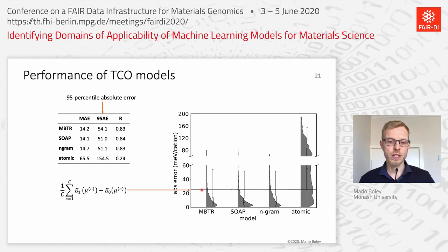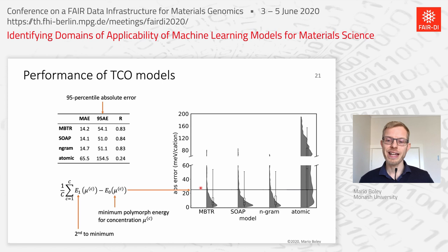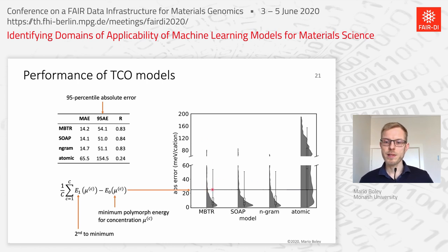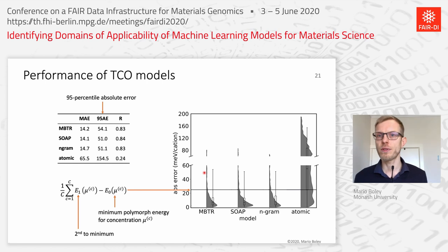To put this in context, I have drawn a horizontal reference line corresponding to the mean energy difference across all considered concentrations between the ground state polymorph and the second-lowest energy polymorph. If my error reaches that region, I have a good chance of confusing the ground state polymorph for individual concentrations. This is discouraging — there's a relatively high probability that all these models end up close to or beyond that reference level. Without further means of analysis, one could only discard everything and start over.